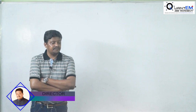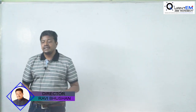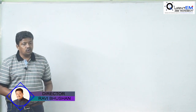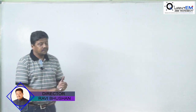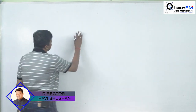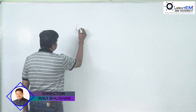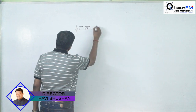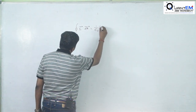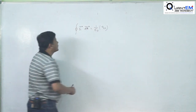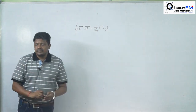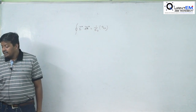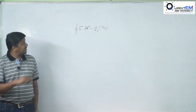Find field intensity using the formula: the integral of E·dA is equal to 1 by epsilon naught times Q-enclosed.